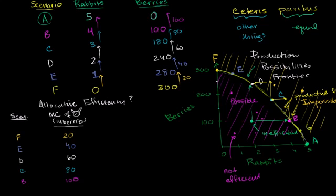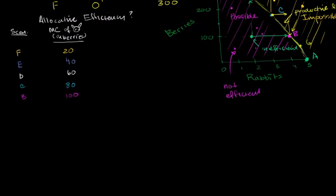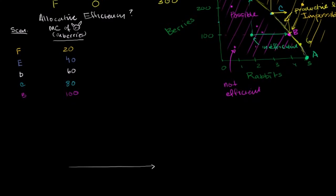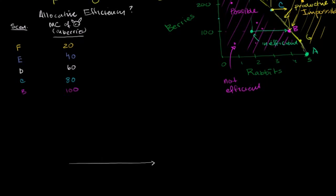We can actually plot these on a graph. Let me draw an axis over here. On the horizontal axis, let's put the different scenarios: scenario F, scenario E, scenario D, scenario C, and scenario B.